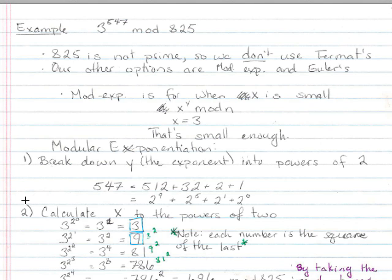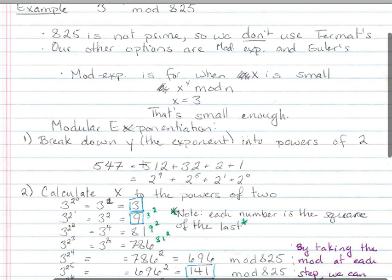First, we want to break down y, that's the exponent, into the powers of 2. So, our y, our exponent, was 547, which I have broken into 512, plus 32, plus 2, plus 1. Which is the same thing as writing 2 to the 9th, plus 2 to the 5th, plus 2 to the 1st, plus 2 to the 0. That's the first step. We broke down the exponent into powers of 2.